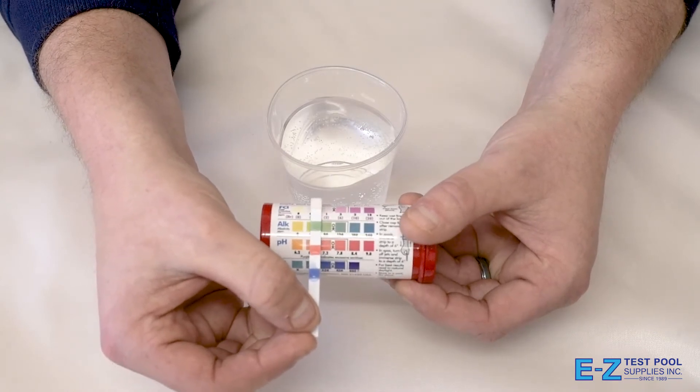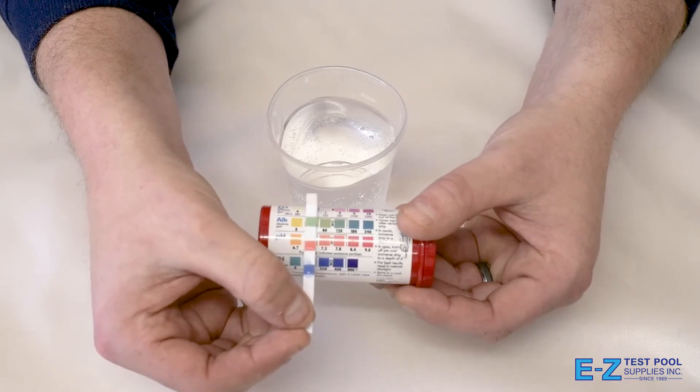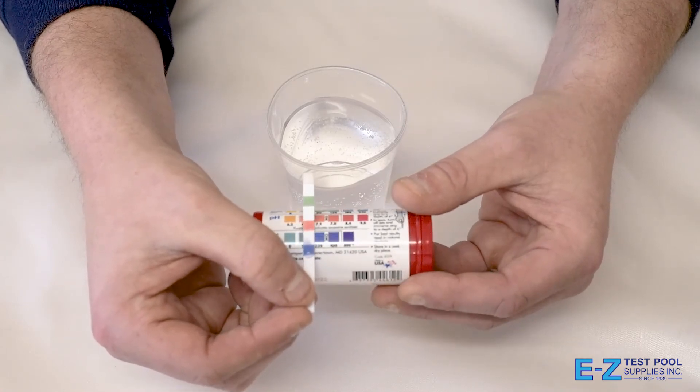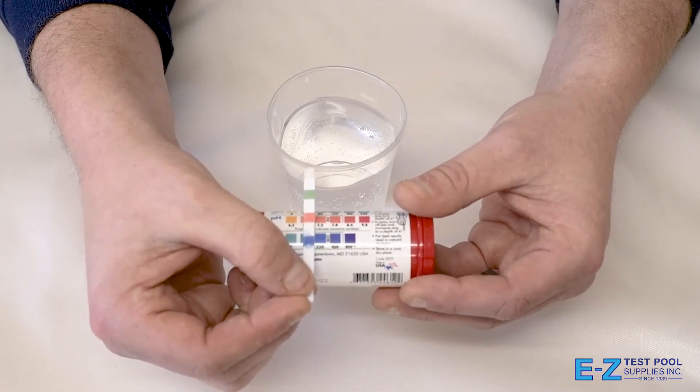The total alkalinity falls between 40 and 80 parts per million. The pH rests at about a 7.2 and the total hardness is dead on at about a 250.